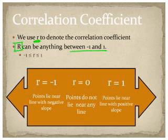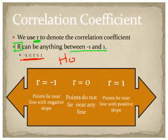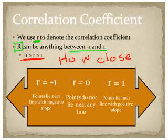The algebra we see is right down here in inequality form: negative one is less than or equal to r, and r is less than or equal to one. All it's saying is it's between one and negative one — it can be anything in between there. What this number does when we evaluate it is it lets us know how close our best fit line is to the scatter plot.